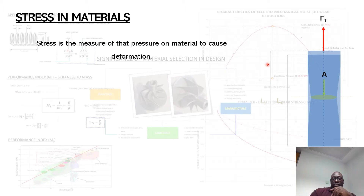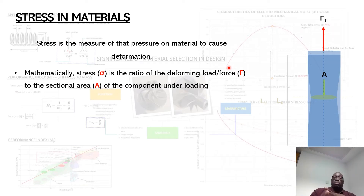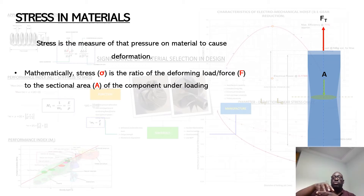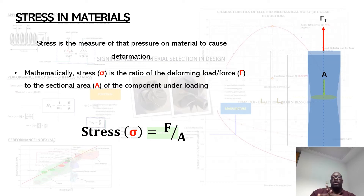Stress can be defined as the measure of the pressure on the material that's going to cause it to deform. Mathematically, stress has the same formula as hydrostatic or hydrodynamic pressure in thermodynamics. Stress, which is typically characterized by the Greek letter sigma, is the ratio of the external force causing the component to deform divided by its cross-sectional area. Thus, stress is equal to force divided by area.